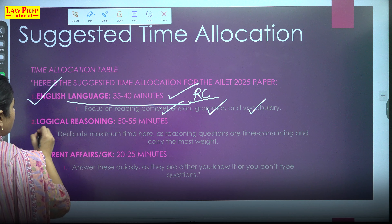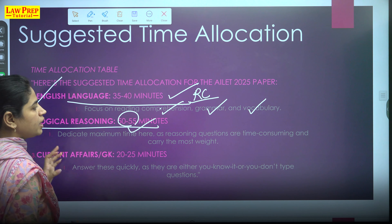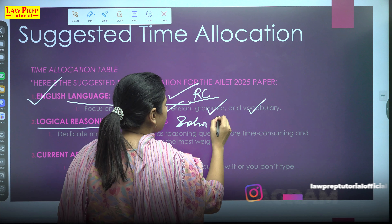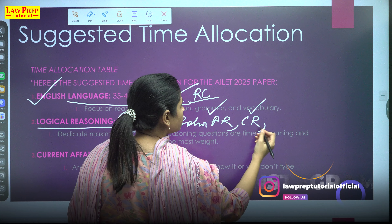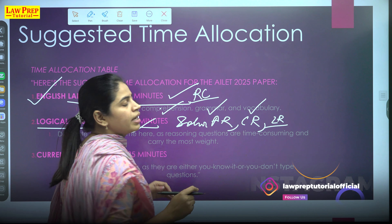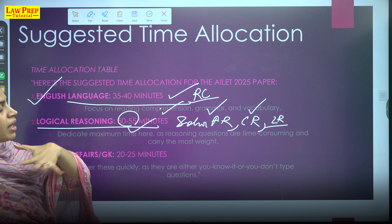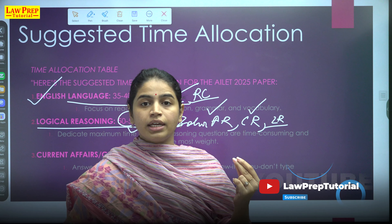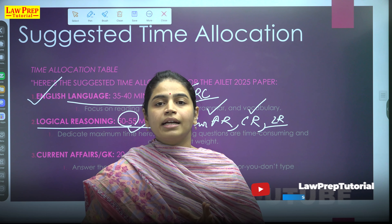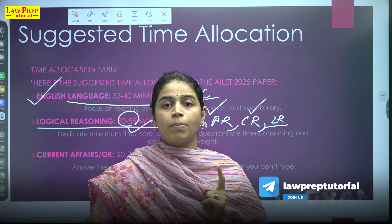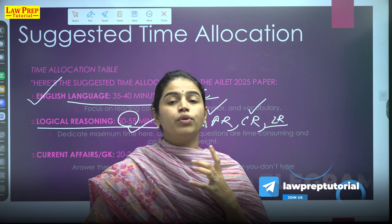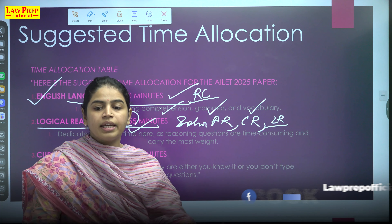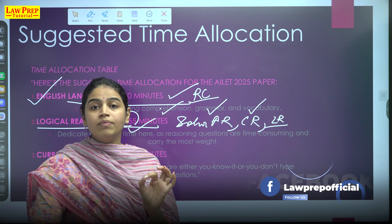After that comes logical reasoning — give 50 to 55 minutes. I'm giving maximum time to this because you'll need to solve AR questions, reduce time on CR, and also reduce time on legal reasoning. You may give up to one hour to just 70 questions. Some questions will be easily solvable, some won't be. You've learned from CLAT that if a question is getting stuck, you do not need to solve it — don't let your ego get involved. The time will not wait for you.